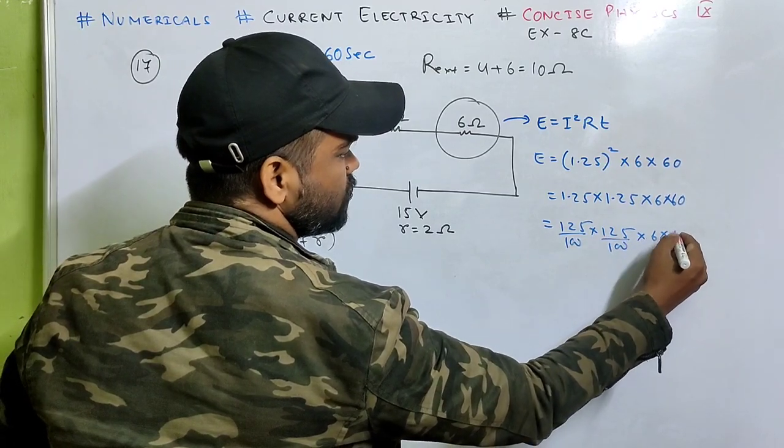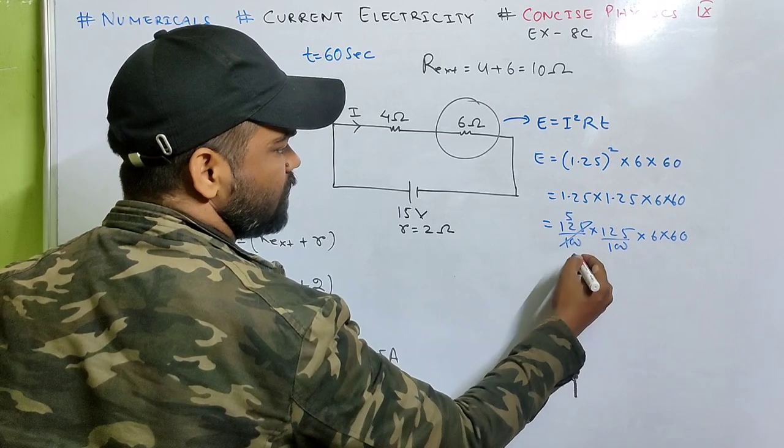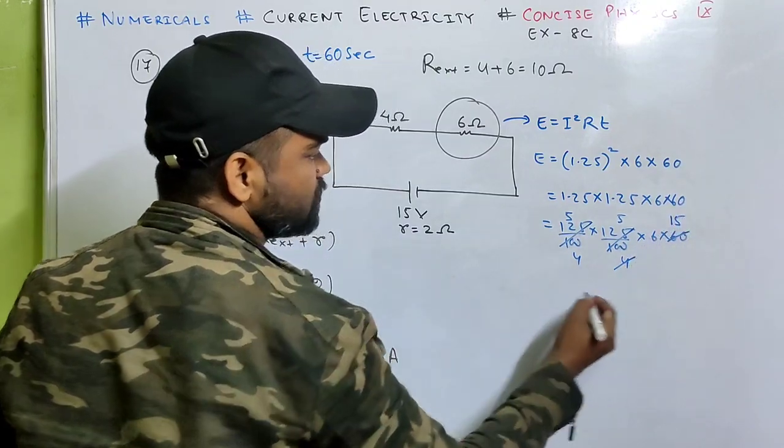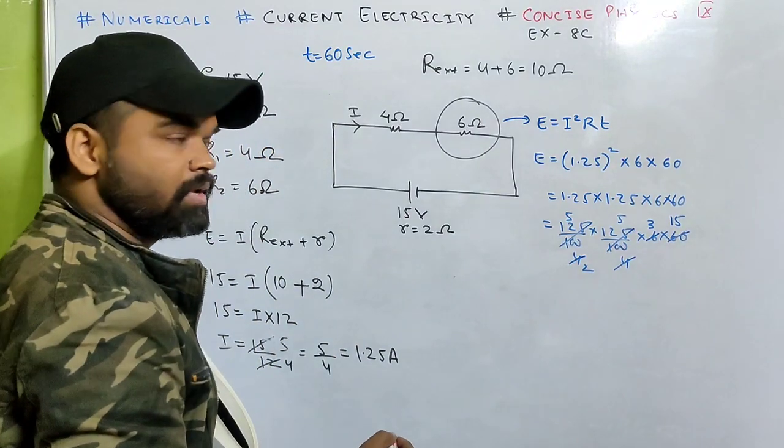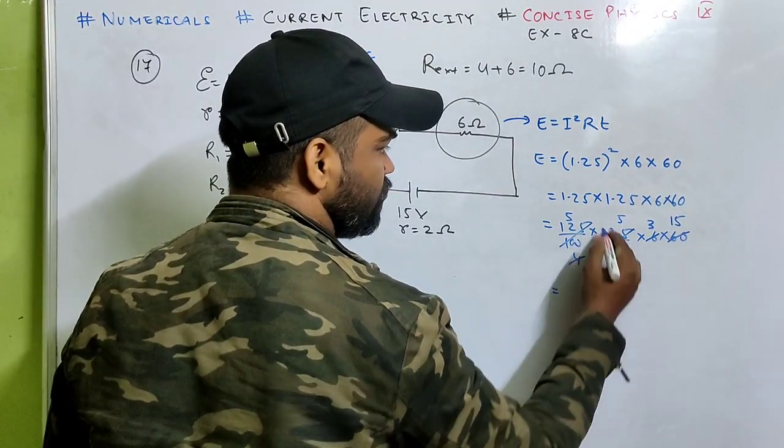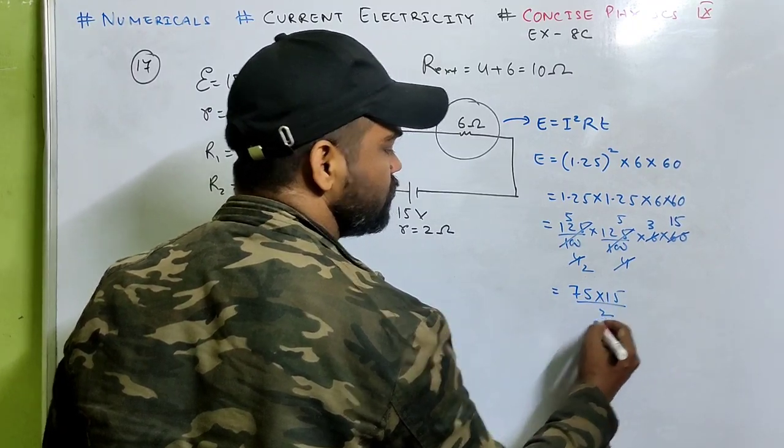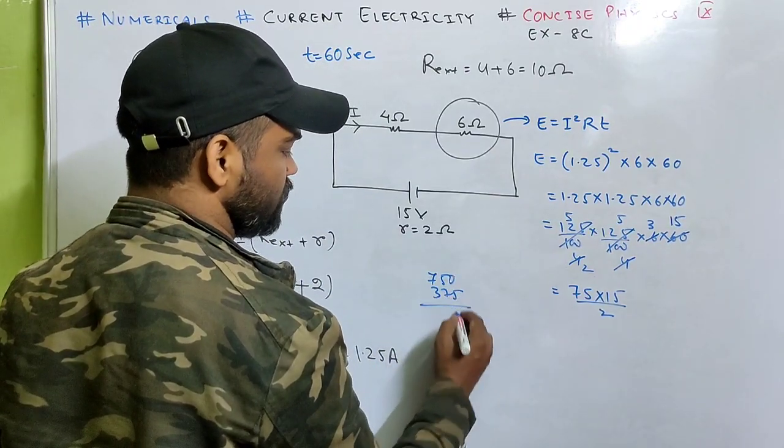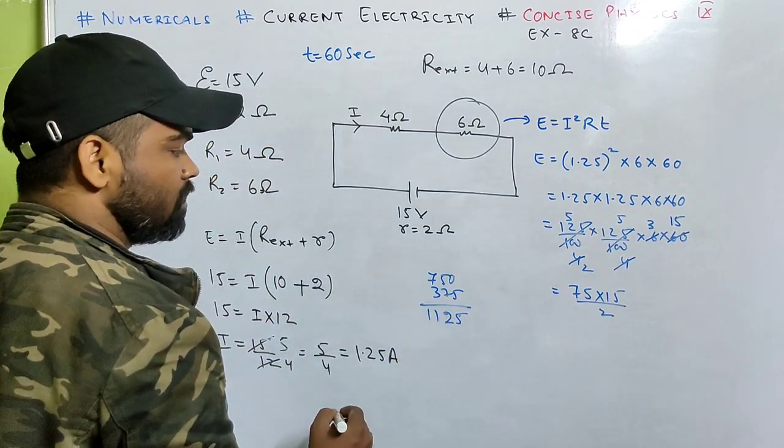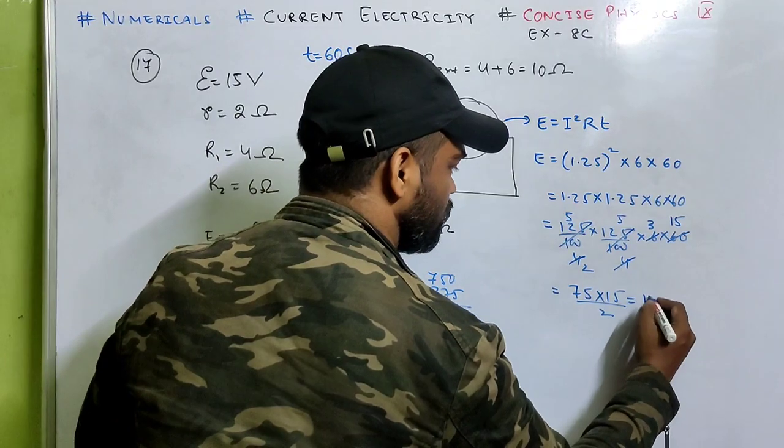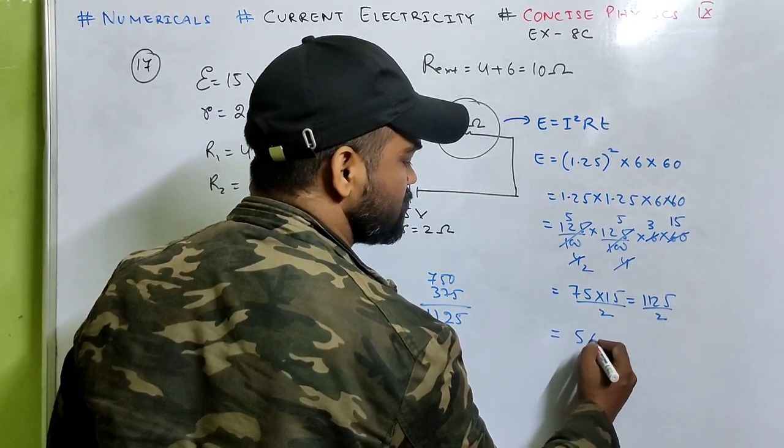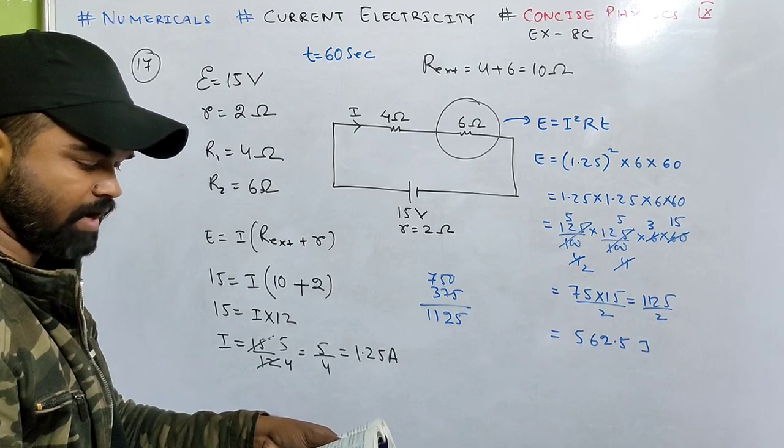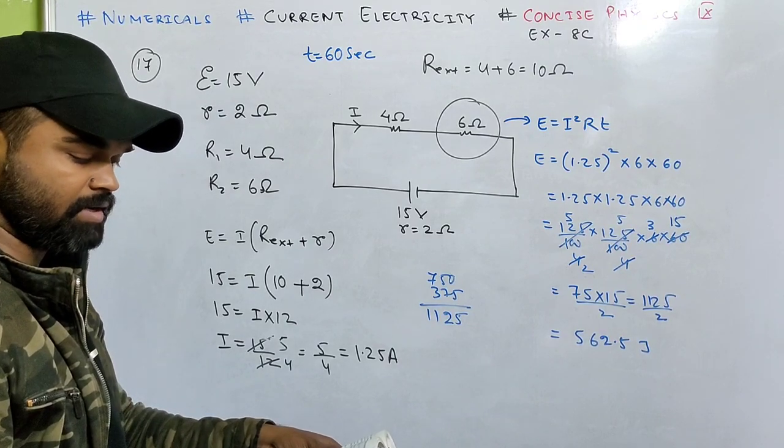Just substitute the values: I squared R T equals 1.25 squared times 6 times 60. That's 125 by 100 times 125 by 100 times 6 times 60. Simplifying this calculation...